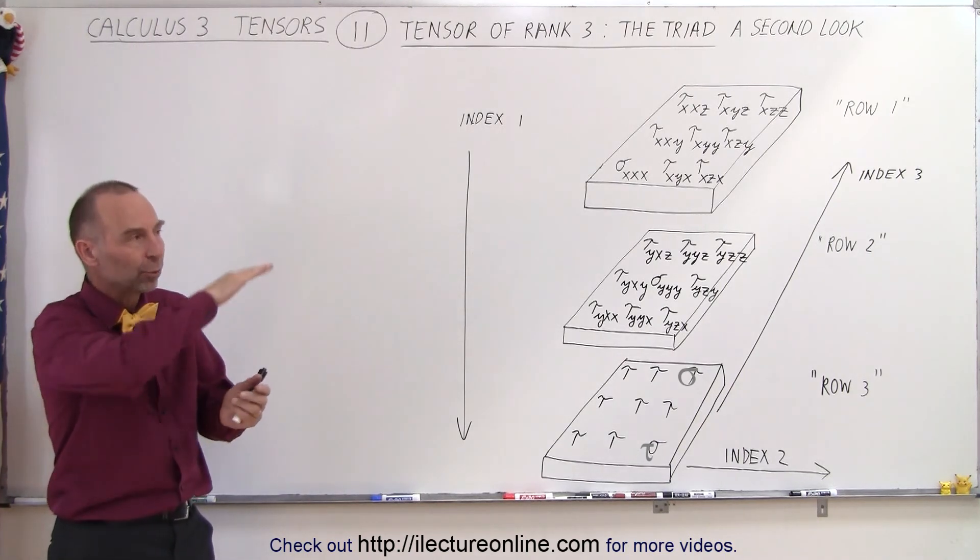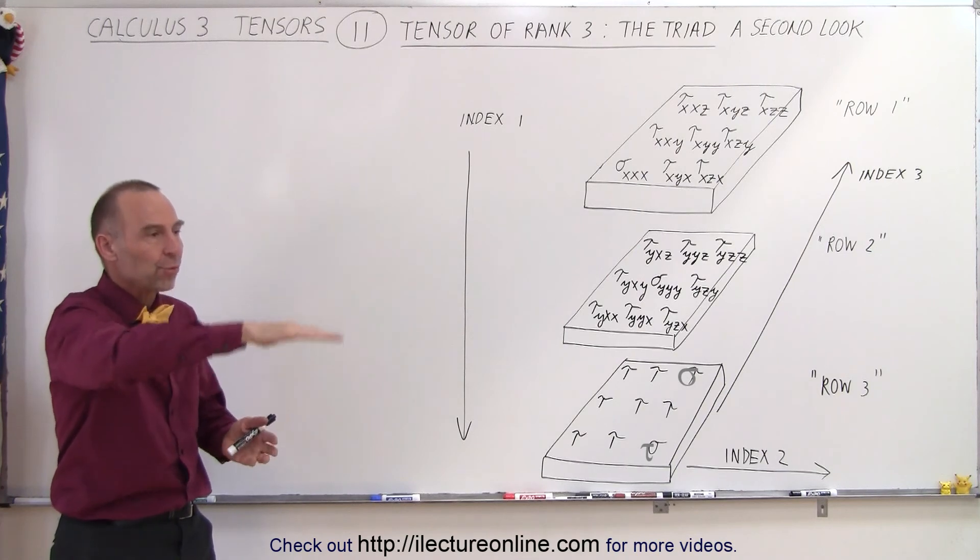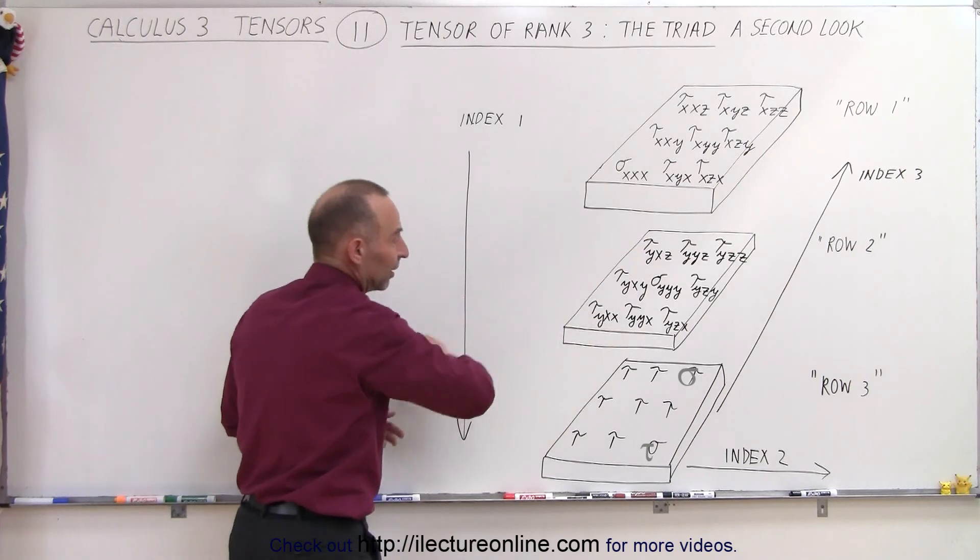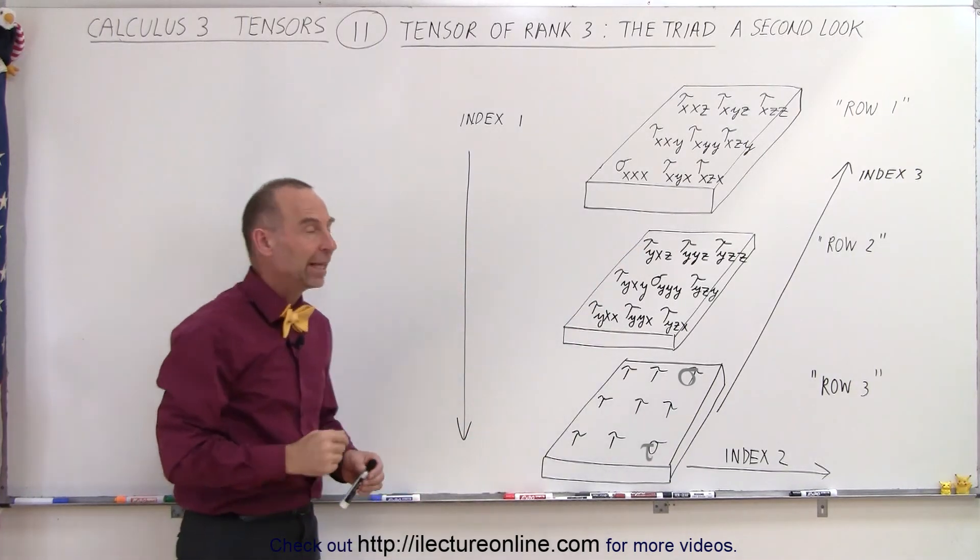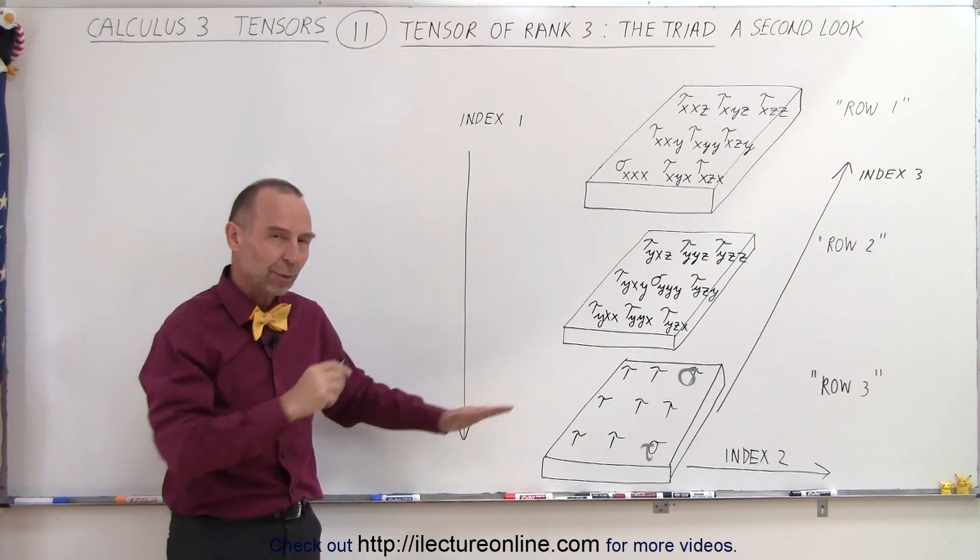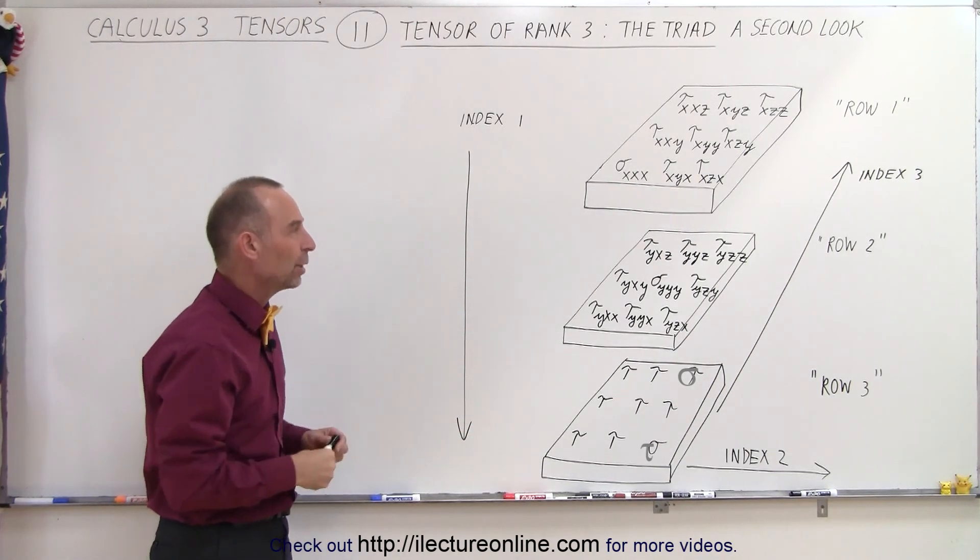But here what we did was we sliced the block up in three vertical slices so to speak. We have a slice from the top, a slice from the middle, and a slice from the bottom, and then we have placed in the subscripts, but I've left one blank so we can fill it in together so we can see how that really works.